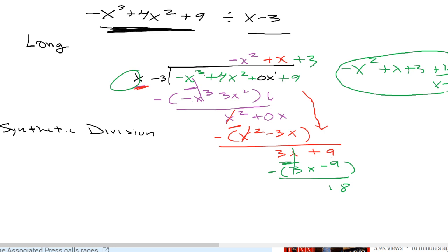Let's consider just the coefficients. This one here is negative 1, we have 4. Don't forget the placeholder, 0 and 9. Divide that by x minus 3.